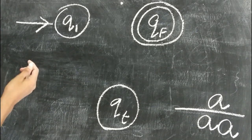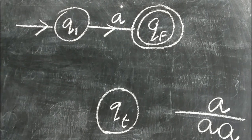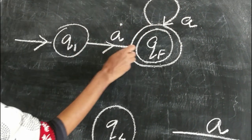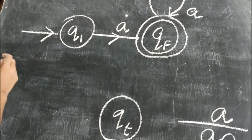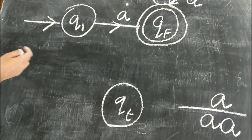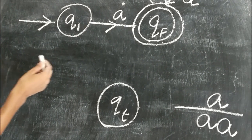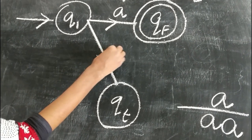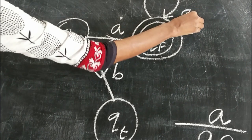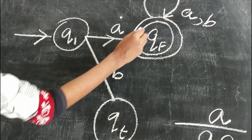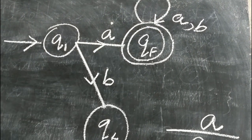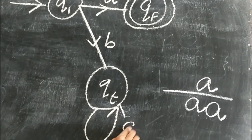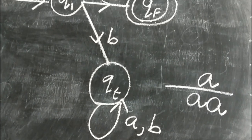Accepting A is simple — we give a transition from Q1 on A to QF. For AA, from QF we give A back to QF as a self-loop. Now we give the remaining transitions to the trap state. We cannot give B from Q1 because our language must start with prefix A, so B from Q1 goes to the trap state. From QF there is no restriction, so we give B a self-loop on QF as well, allowing strings like AB, AAB, etc. Finally, the trap state gets self-loops for both A and B. This completes the DFA for all strings starting with prefix A.